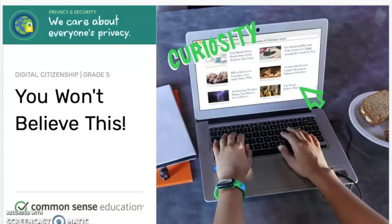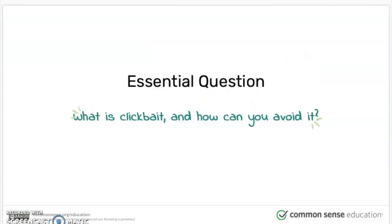We're gonna be talking about that today in our computer lesson. So sit back, relax. I'm gonna show you a couple examples of what clickbait is. Today's lesson is going to be about clickbait and how you can avoid it. With everybody being online a lot more, you're probably coming in contact with more and more of these articles that pop up, especially during social media. If you have a social media account like Snapchat or Facebook, these articles are always popping up. The goal of them is to get you to click on them no matter what. Sometimes they're real and sometimes they're not — they're used to get your information or to infect your computer with something.